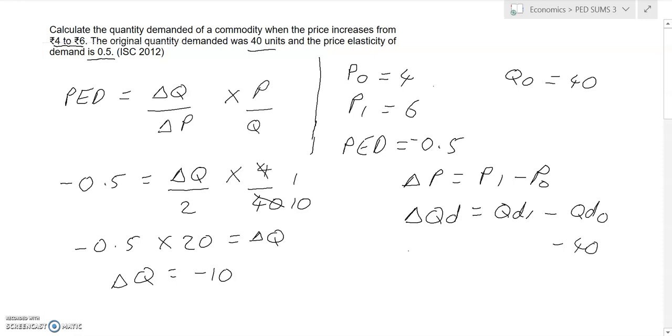We know the change in quantity demanded is -10, and now we can solve for new quantity demanded. Moving 40 to the other side: -10 plus 40 equals the new quantity demanded. Therefore, the new quantity demanded equals 30.